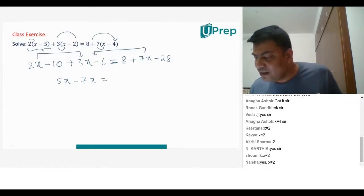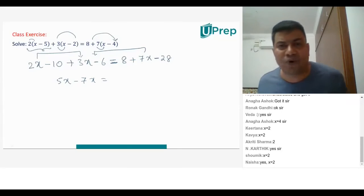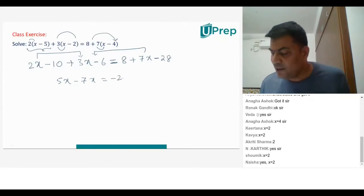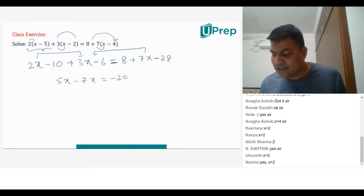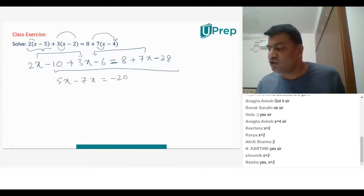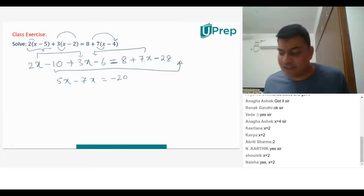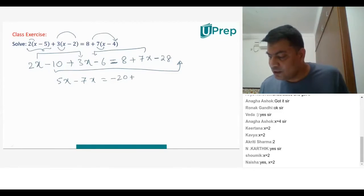What all do we have? 8 minus 28. What is 8 minus 28? It is minus 20. And you have your minus 10 this side. This minus 10 goes on the right-hand side of the equality. Minus 10 will become plus 10.